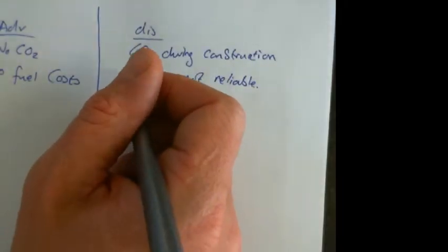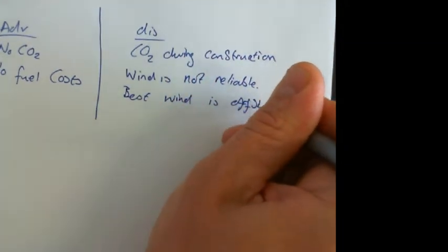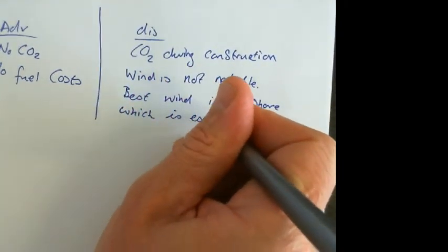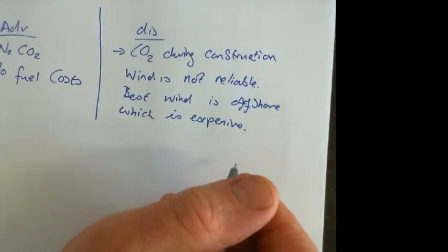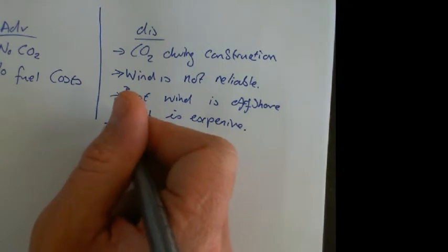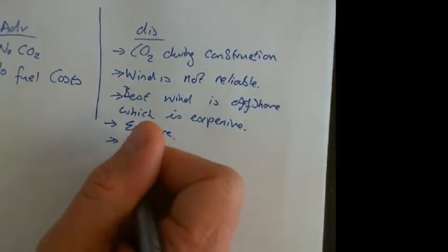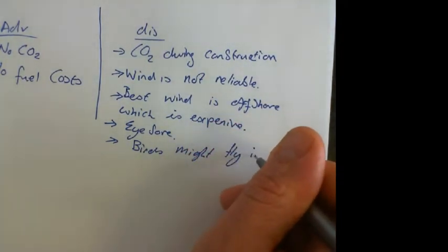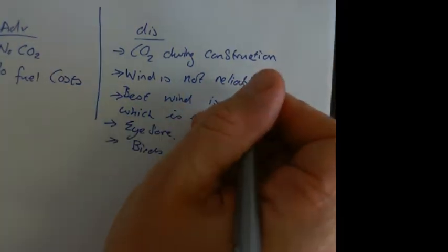And the best wind is offshore, which means out to sea, which is expensive. Other things which are a little bit less science based but more people based are that they are an eyesore. People don't like them near them. And people are also worried about birds might fly into them. But the major one, the real problem with them is that they're not reliable.